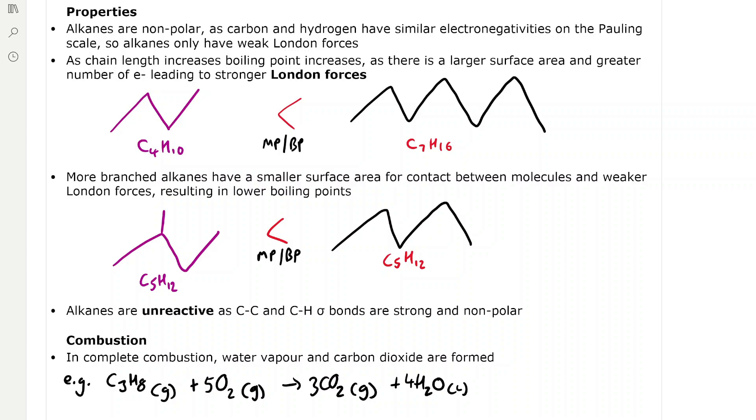As chain length increases, the boiling point increases because there's a larger surface area for contact between molecules and greater number of electrons leading to stronger London forces.